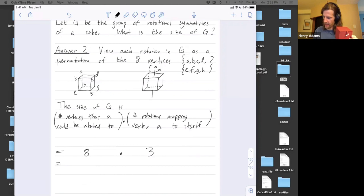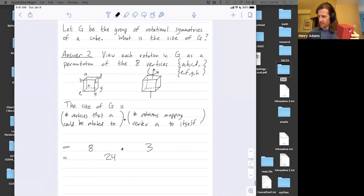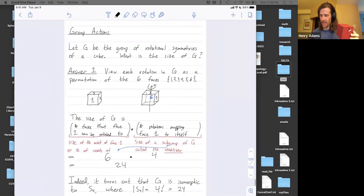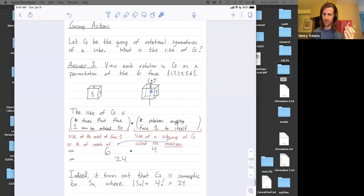And I again get 24. So answers one and two gave me the same answer, but they sliced it up differently. In answer one, I was thinking of my rotations as permuting faces. And I saw that I had 24 different rotations because if I fix a face, there's four rotations that map that face to itself. And there's six different faces that that face could get mapped onto.